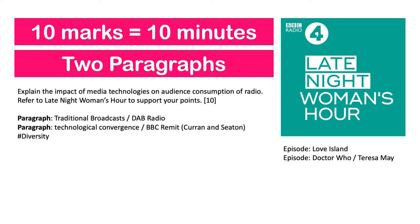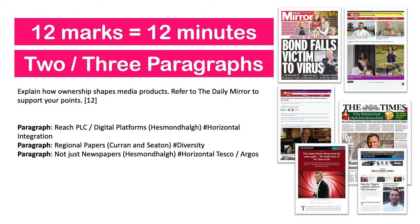For a 12-mark question on newspapers — about 12 minutes, realistically two to three paragraphs. The question: 'Explain how ownership shapes media products. Refer to the Daily Mirror to support your points.' Your first paragraph will probably talk about Reach PLC, who own the Daily Mirror, digital platforms, and horizontal integration. Then you can move on to regional papers and Curran and Seaton — diverse business practices. Reach PLC are not just about newspapers; they also do printing and have worked with companies like Tesco and Argos. It's quite a complex area, so I recommend watching the Mrs. Fisher videos on this.